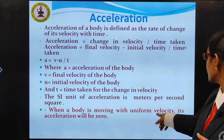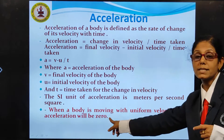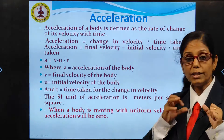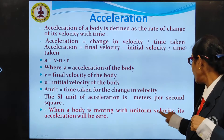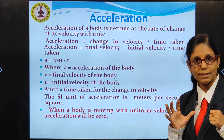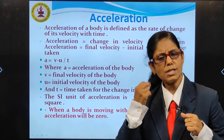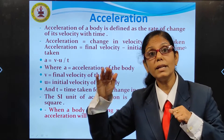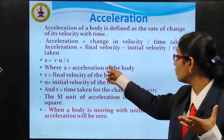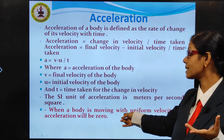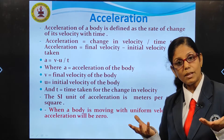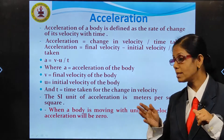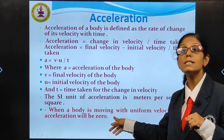Now, when a body is moving with uniform velocity, its acceleration will be zero. Why? Uniform velocity means velocity remains the same. If velocity remains the same, there is no change in velocity. So acceleration, which is change in velocity divided by time, will be zero. That is why we say when the body is moving with uniform velocity, acceleration of the body is zero.